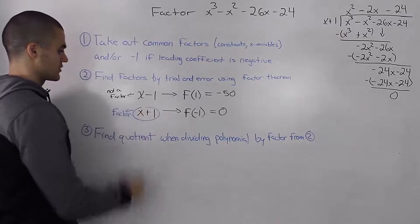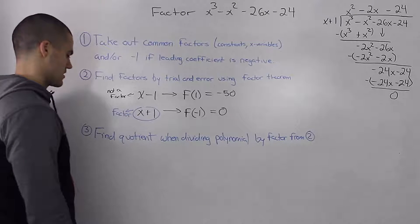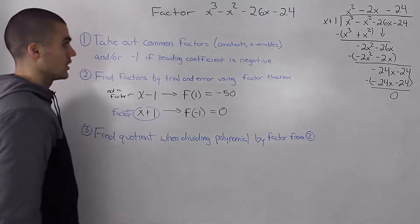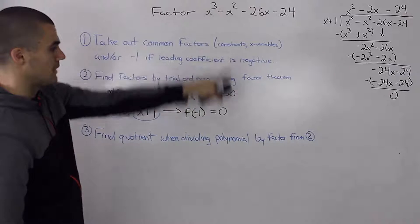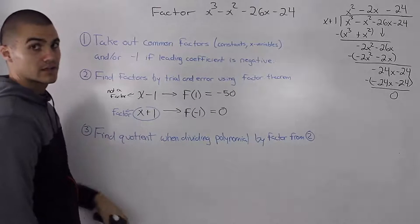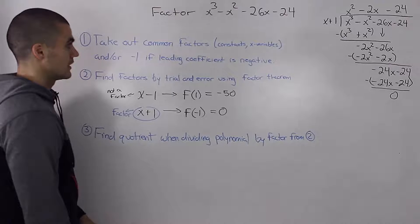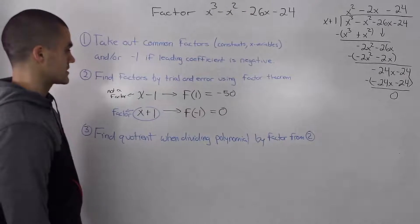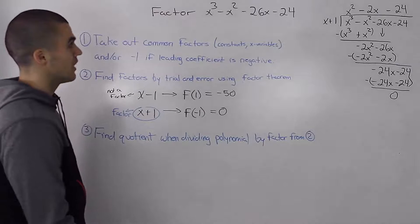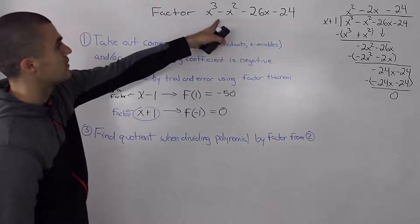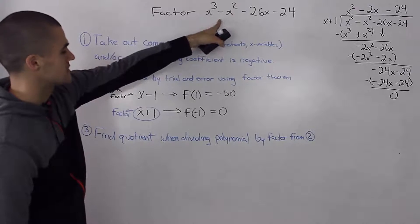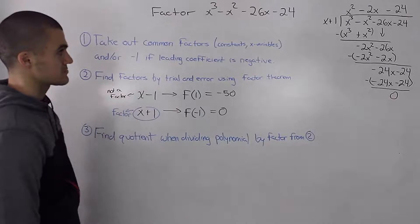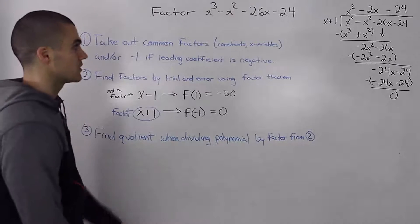Now that we found our factor in step two we can move to step three and we have to find the quotient when dividing our polynomial by the factor that we found in step two. Now I did the division on the side for you but just so you could practice, you should pause the video and try it yourself. Divide this polynomial by this factor x plus one and see if you get the same result that I did.